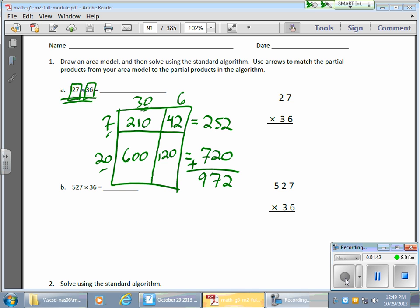Now my algorithm, let me just check here. So I have 6 times 7 gives me 42. Let me put my numbers in the right spot here. Here's my 4. Here's my 2. My 6 times 2 gives me 12. 12 plus 4 gives me 16. And I'm done with the ones.